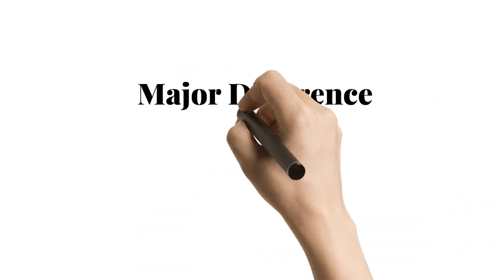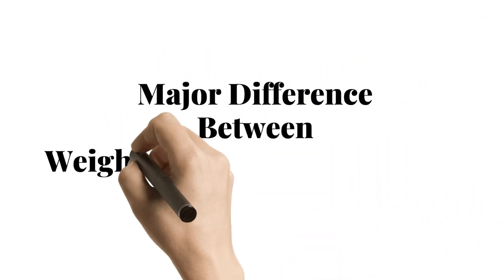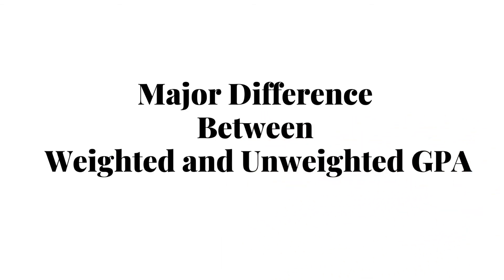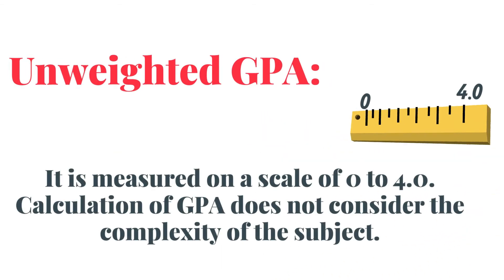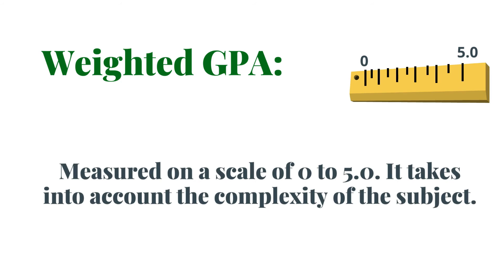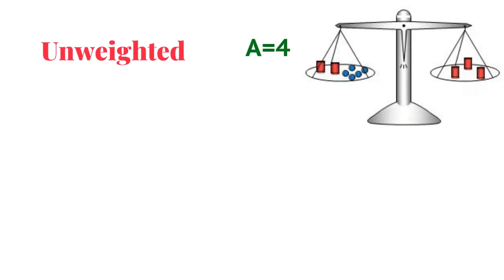But there's a catch — the calculation for weighted and unweighted GPA is different. Unweighted GPA is measured on a scale of 0 to 4.0 and does not consider the complexity of the subject. Weighted GPA is measured on a scale of 0 to 5.0 and takes into account the complexity of the subject. In the case of unweighted GPA, a grade A in any subject refers to 4.0, irrespective of the difficulty.